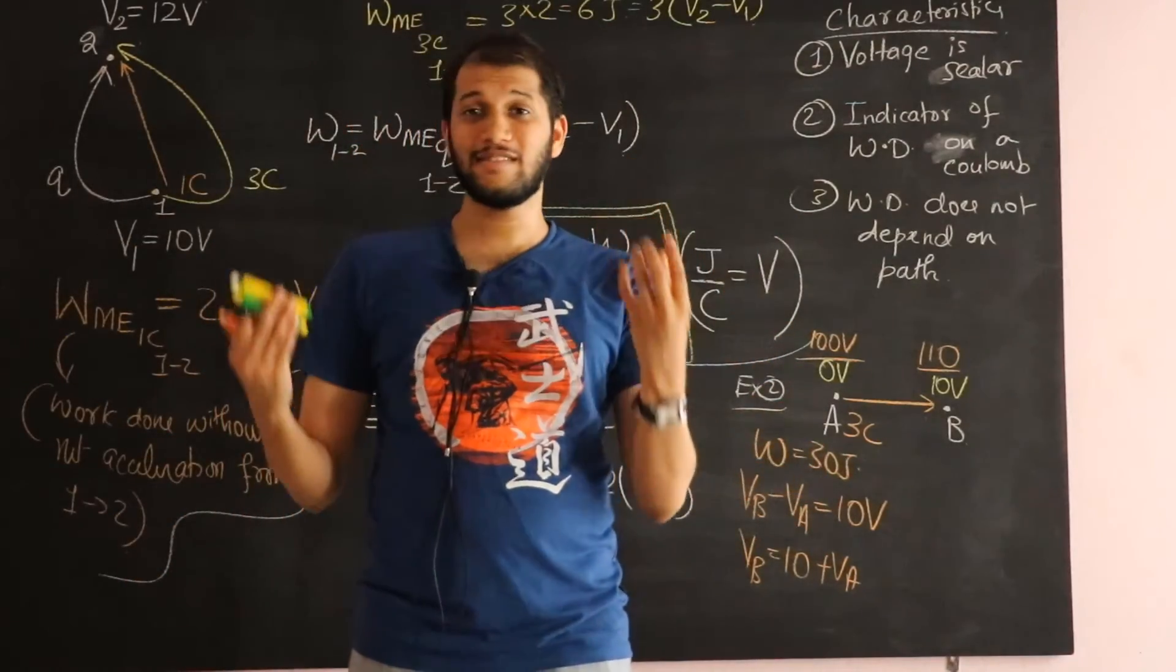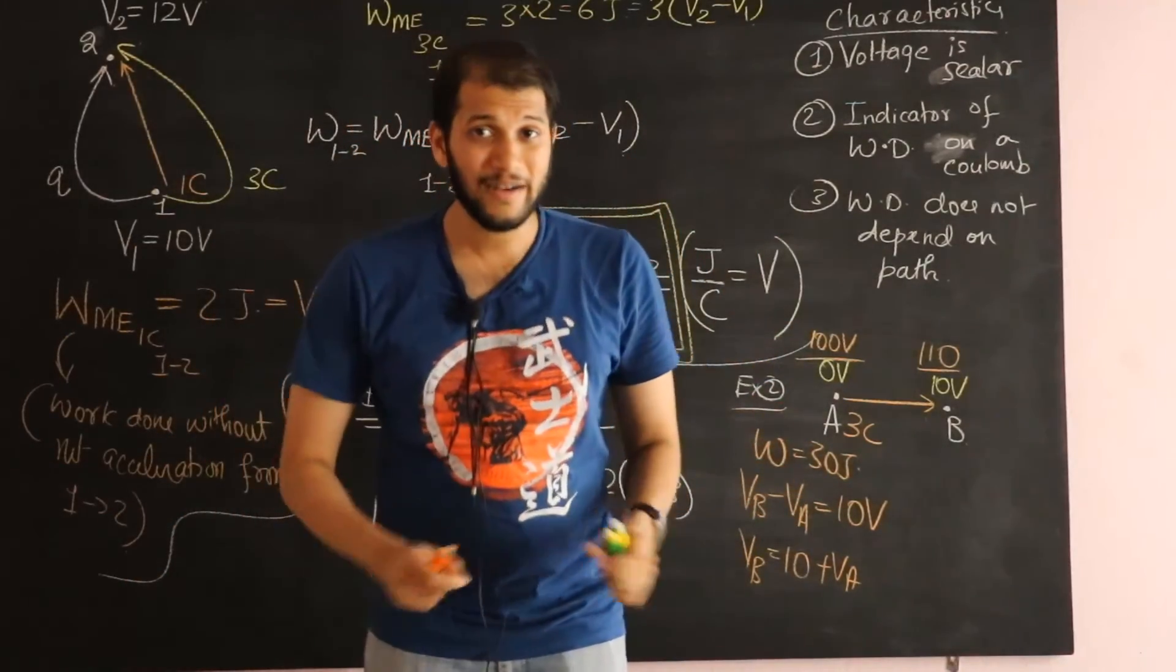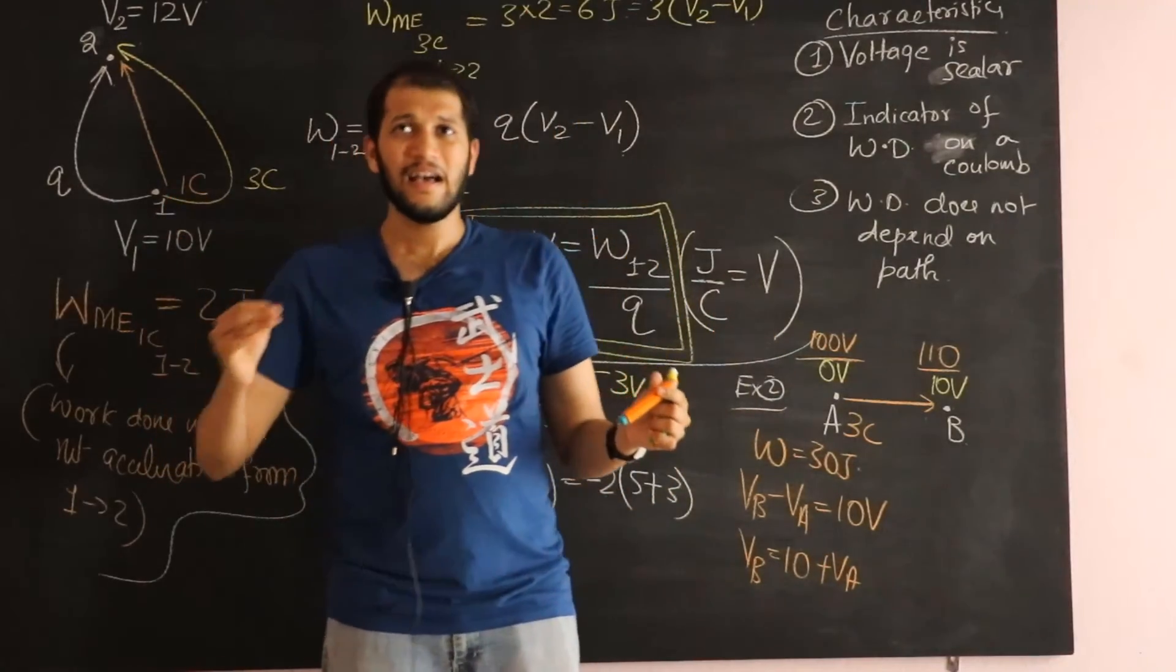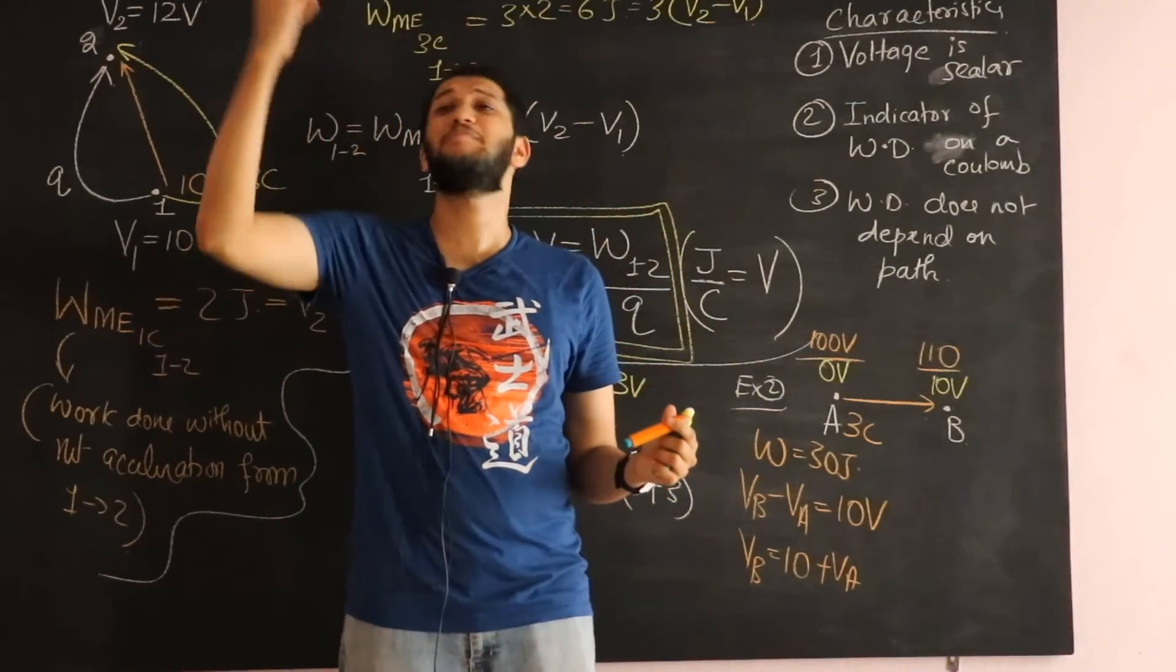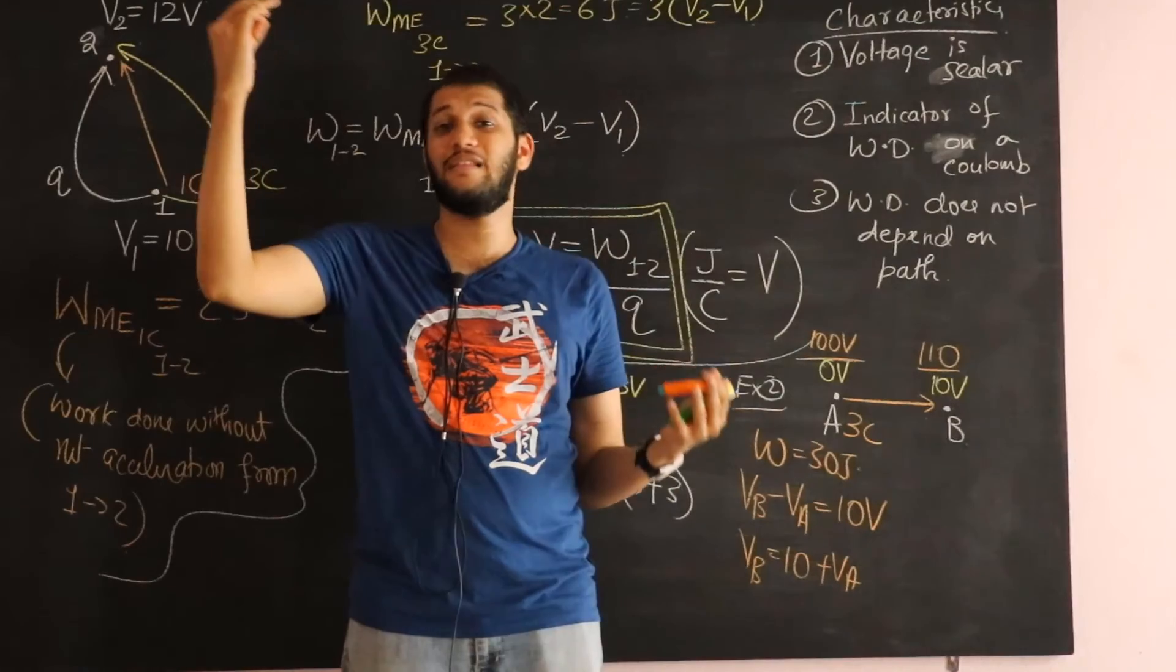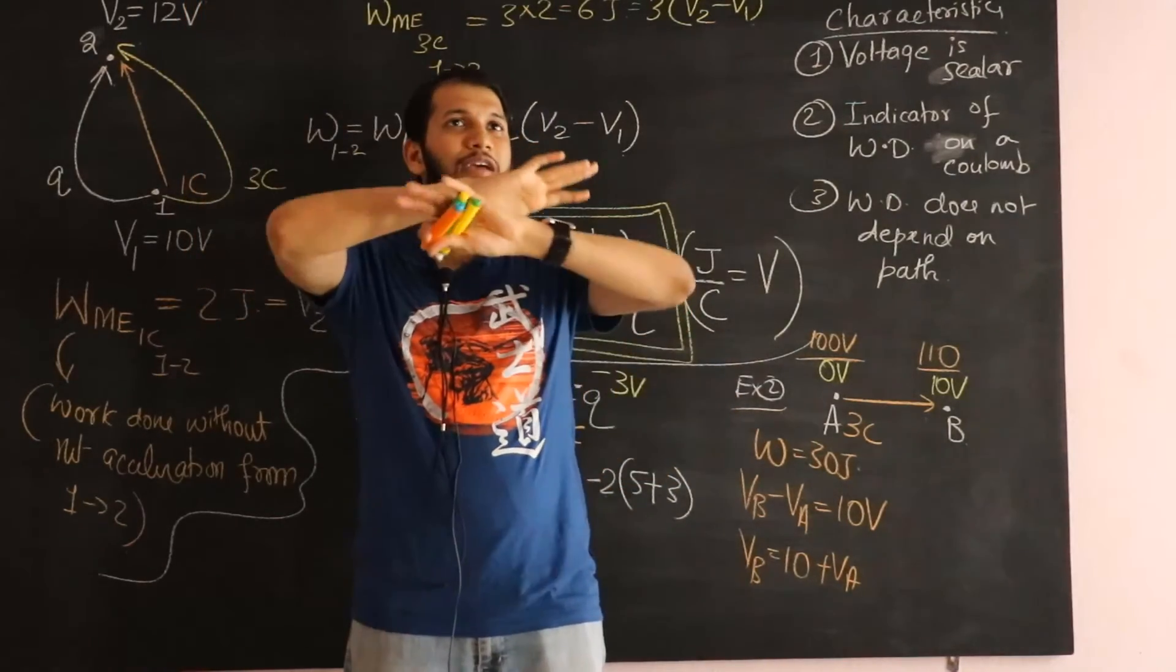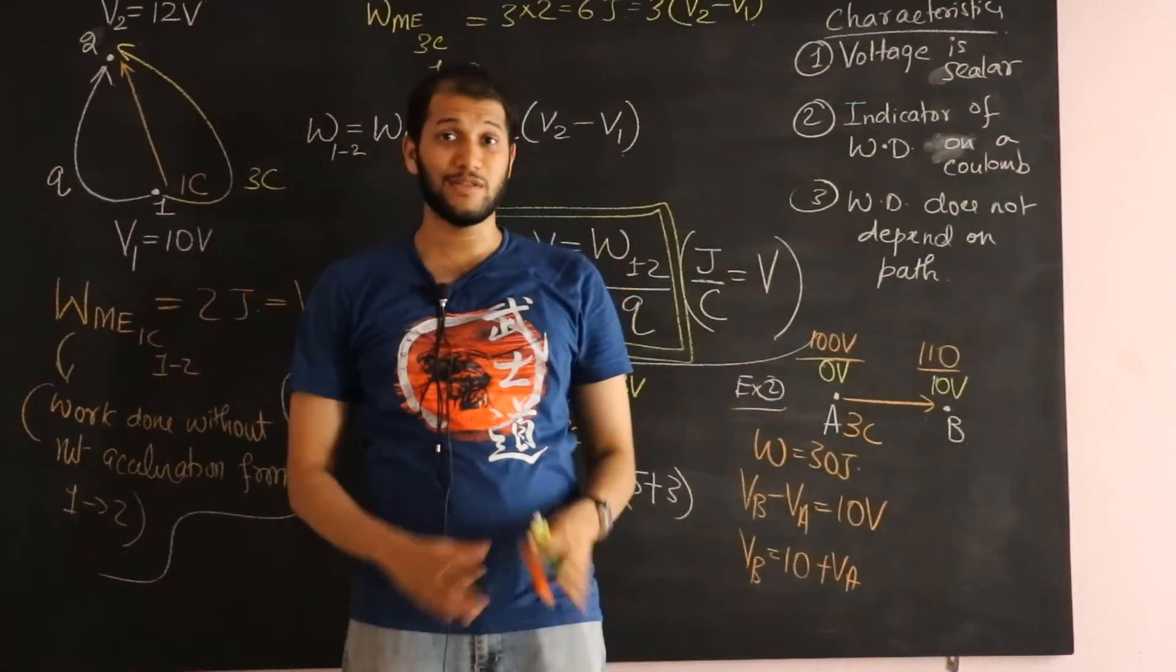So what we want to do is, in this room, if I want to assign voltage at every single point, I would start first by assigning a single point in space an arbitrary voltage, a random value.